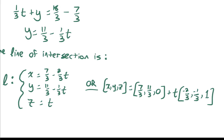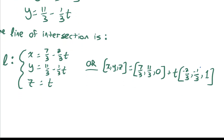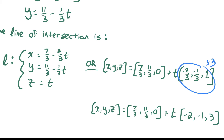A direction vector should always be simplified — no fractions and reduced. Multiplying by 3 eliminates the fractions, leaving direction vector (-2, -1, 3). So the final vector equation is (x, y, z) = (7/3, 11/3, 0) + t(-2, -1, 3). Every point that makes up that line satisfies the equation of both planes — that is our answer for this system.